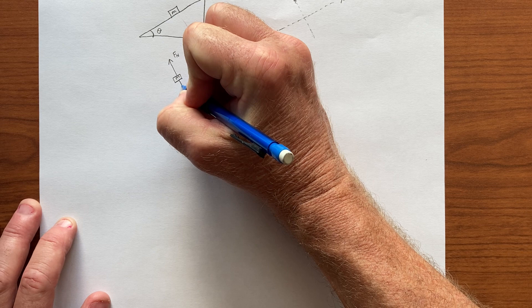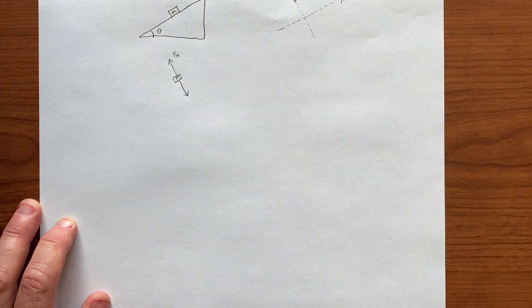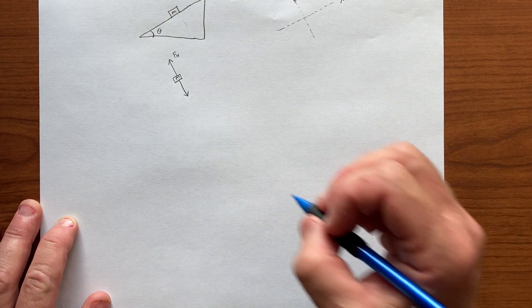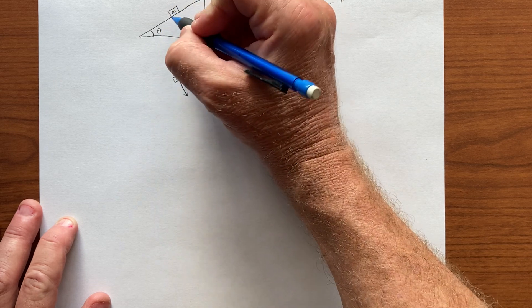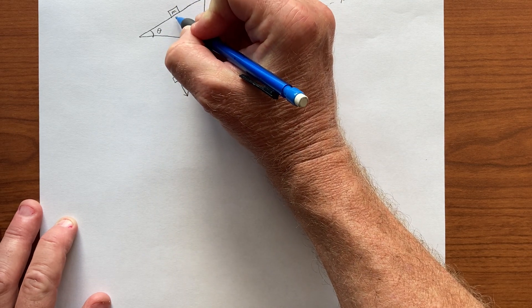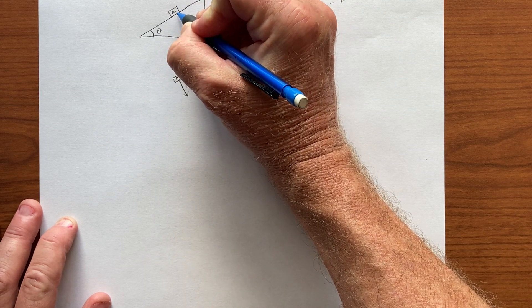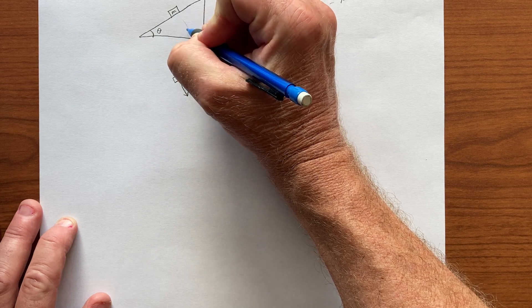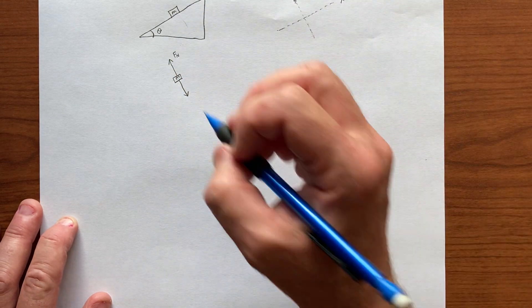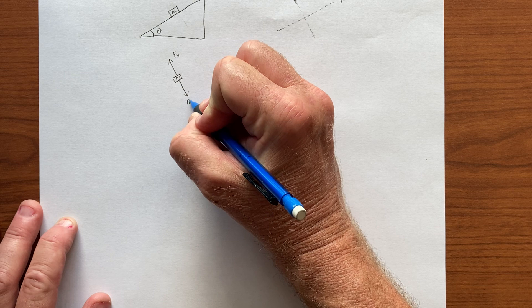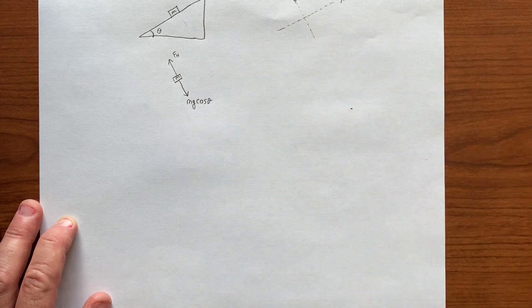So we really want the part of gravity that's this way, and as we saw before, given that angle, we could look at the triangle here. Gravity is straight down, but we need the part over here, and the angle in here would be theta as well. And so this would be mg cosine of theta.